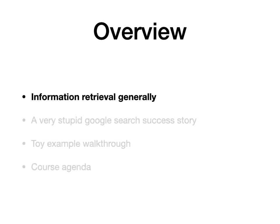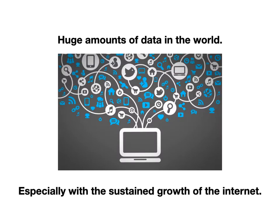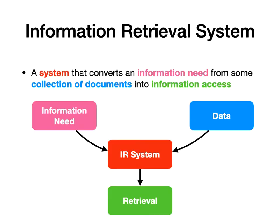Let's talk about information retrieval in a general sense. There's a ton of information in the world — we live in the information age and the internet shows no signs of stopping. In fact, data is becoming the most urgent resource in the world. So what is our way of interacting with all of that data? You do this every single day. Every time you search anything, you are using an information retrieval system — a system that converts an information need from the user, combined with a collection of documents, into information access for that user.